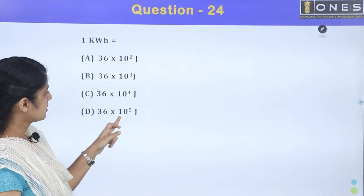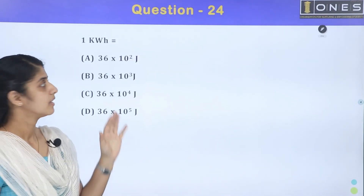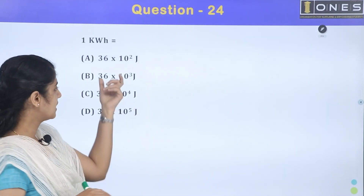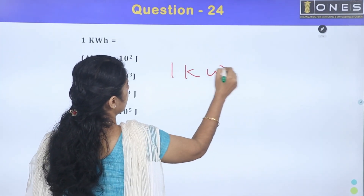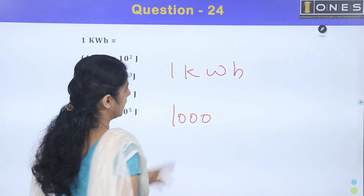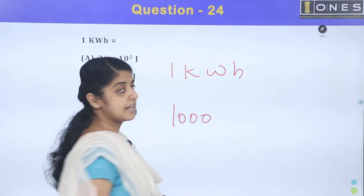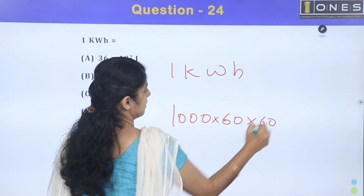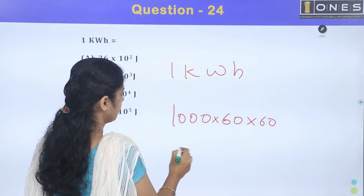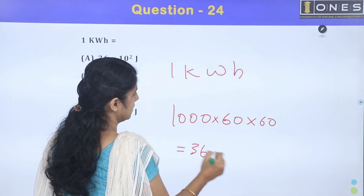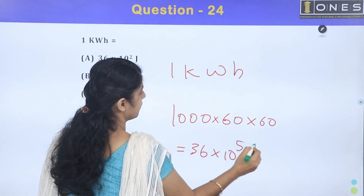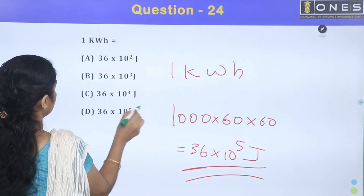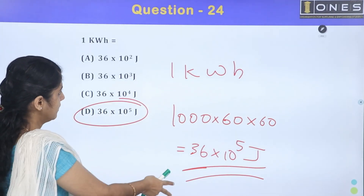Next question: one kWh is equal to how much in joules? One kWh is a kilowatt hour. 1 kWh = 1000 W × 3600 seconds (since 1 hour = 60×60 seconds). That gives 6×6 = 36, with zeros making it 36×10⁵ joules. Option D: 36×10⁵ joules.